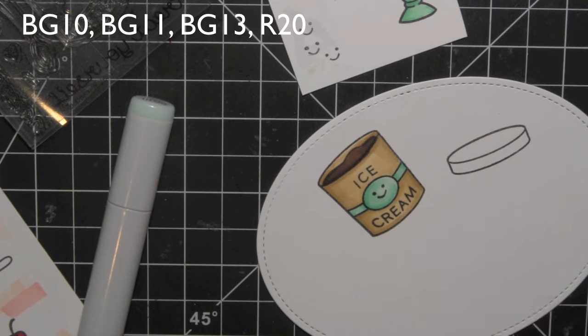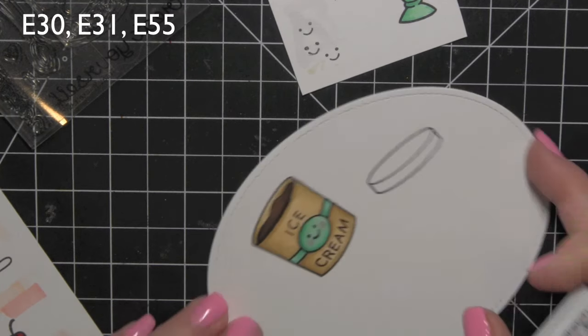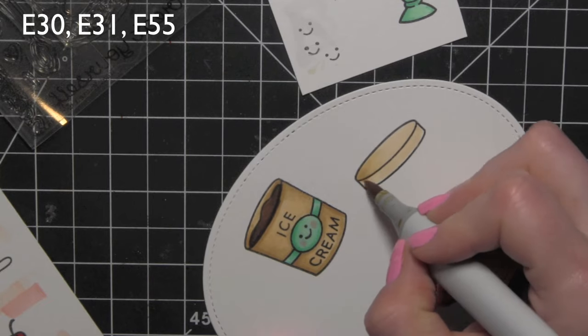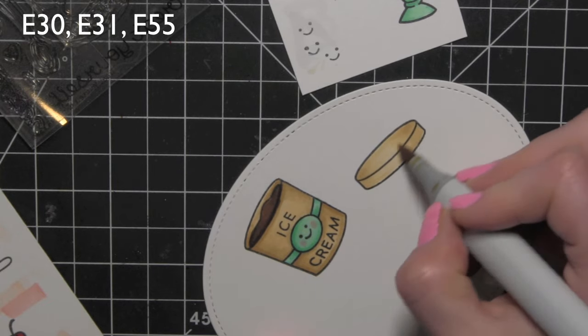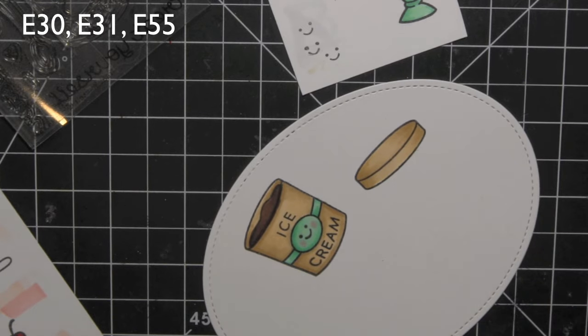A nice way to give a contrasting band to the ice cream bucket color, give it a little bit of personality and fun. I'm going to color in the lid for the ice cream with the same color. I love that the lid is included and also the separate die as well.